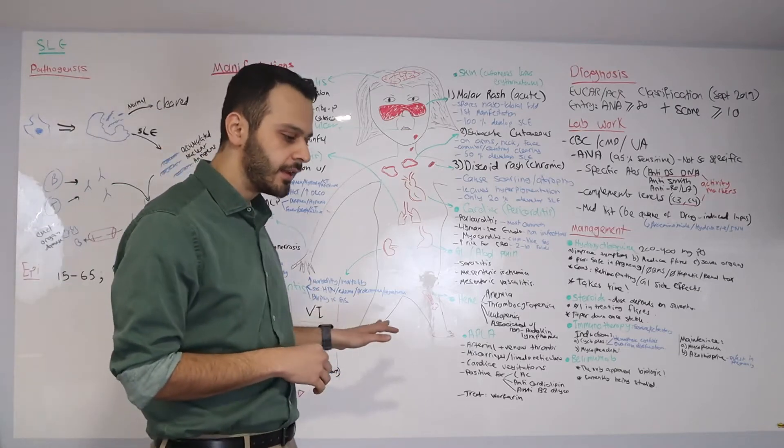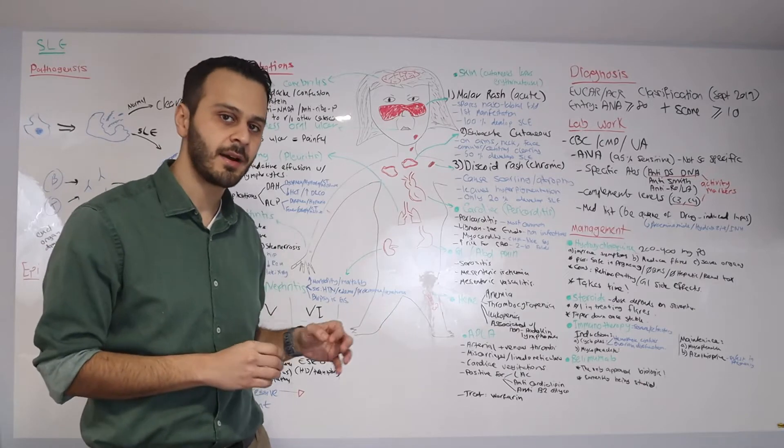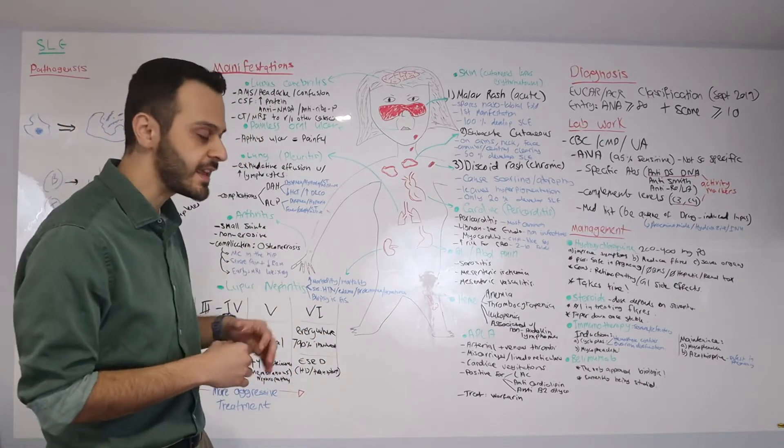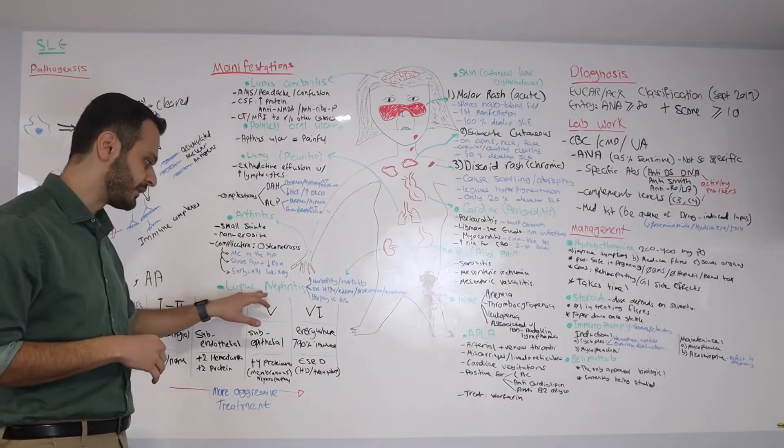The most valuable organ in lupus and the one that we really care most about when it comes to treatment is the kidney, what we call lupus nephritis.